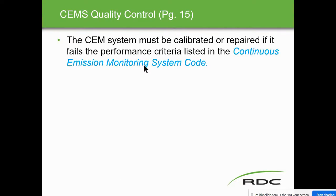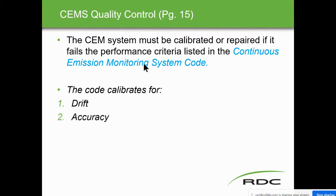Cylinder gas audits prove your gas is the same and introduce a range of gases to check linearity. When we're looking at an analyzer output, we want it to be as linear as possible. The CEM system must be calibrated or repaired if it fails the performance criteria in the Continuous Emission Monitoring System Code. The code calibrates for drift — both zero drift and span drift — as well as accuracy and linearity.